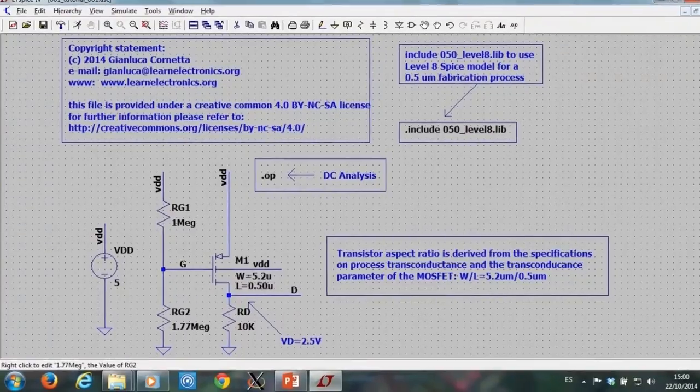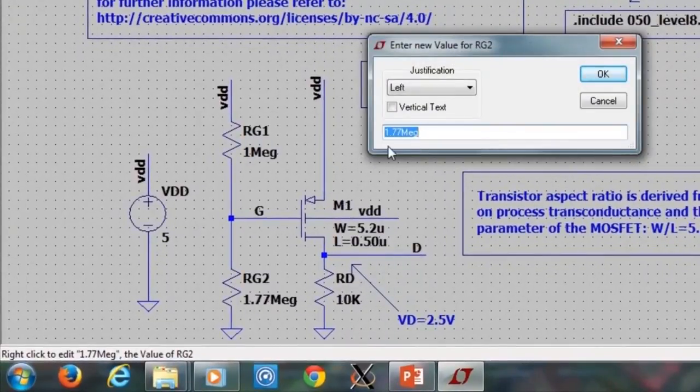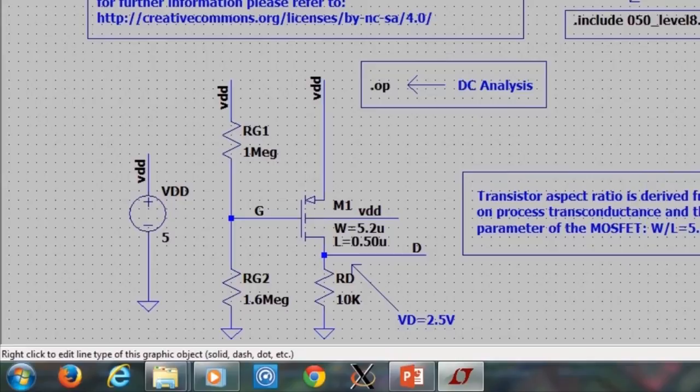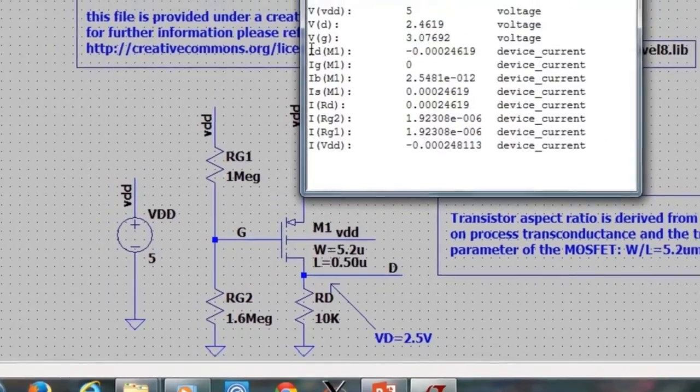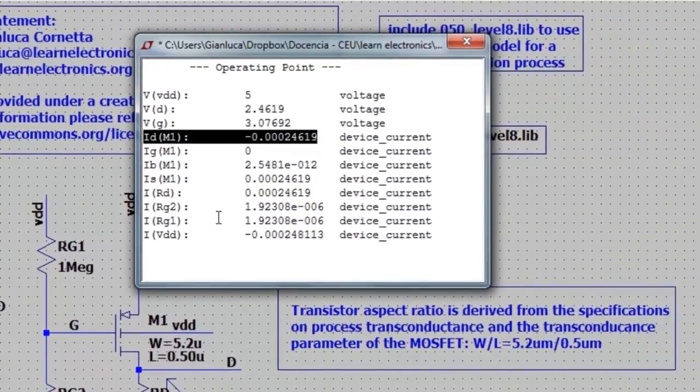By decreasing, for example, resistance RG2 to 1.6 megaohms. If I run once again the simulation, I can see that the new drain current is 0.24 mA.